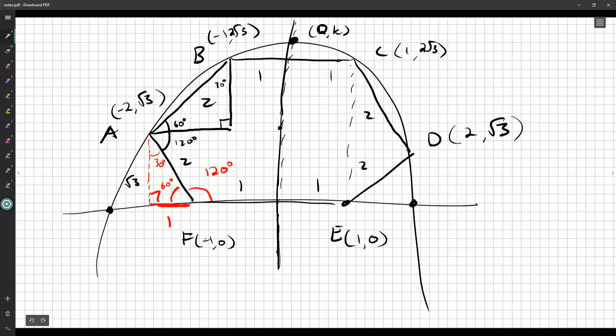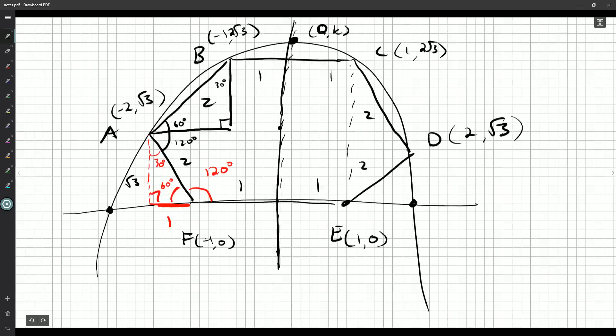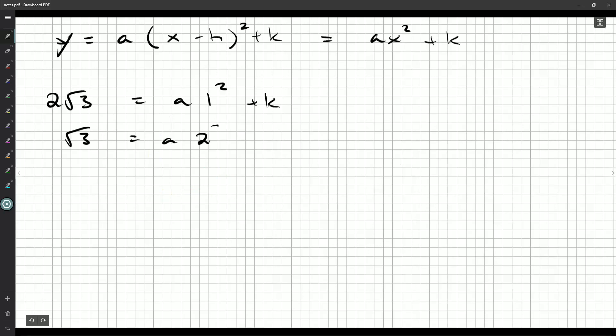Okay, so it's a downward facing parabola. So I know a here will be negative. It'll be a(x - h)² + k. Of course, h is 0. So I'll get ax² + k. And what I can do now is I can start working out what this should be. So for example, I know that C is on this parabola. So 2√3 is going to be a(1)² + k. And I also know that D is on this parabola. So √3, the y-coordinate, is going to be a(2)² + k. I'll get a + k and 4a + k.